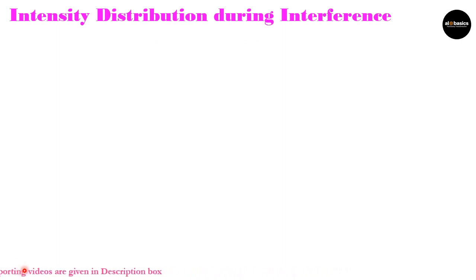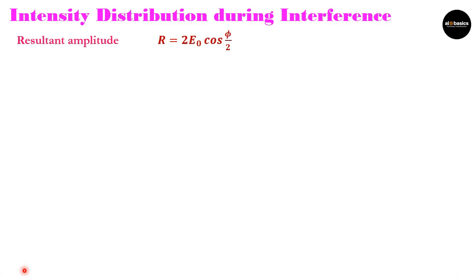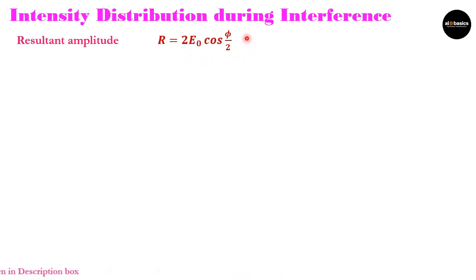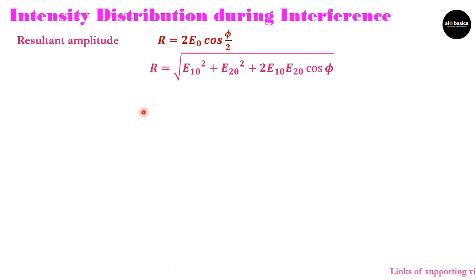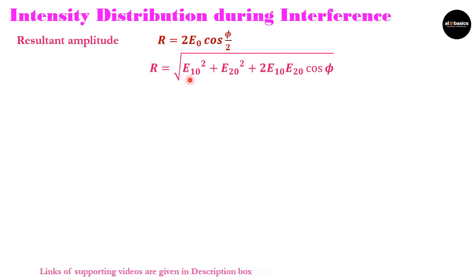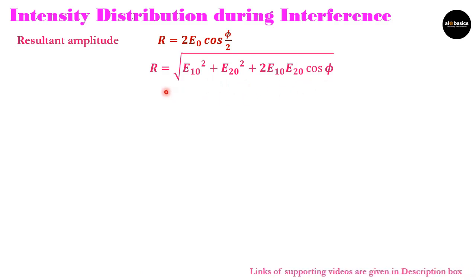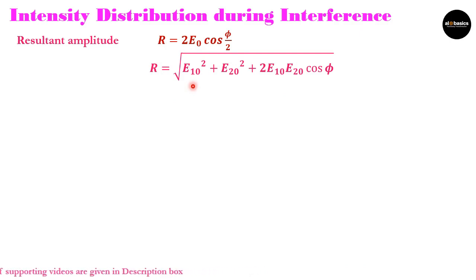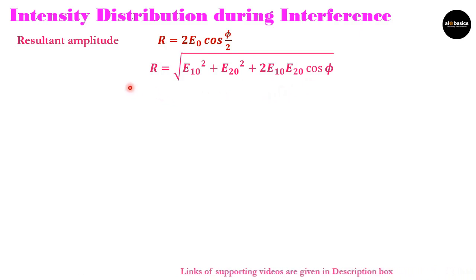The resultant amplitude of two interfering waves having the same amplitude is given by r = 2E0 cos(φ/2), where E0 is the amplitude and φ is the phase difference. If amplitudes are not the same, the resultant amplitude is given by √(E10² + E20² + 2·E10·E20·cos φ). From this general expression, substituting E10 = E20 = E0 easily gives us the earlier expression.